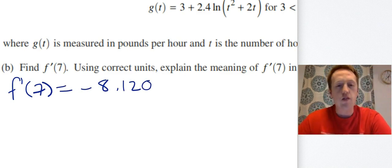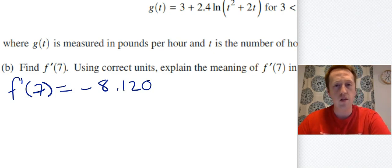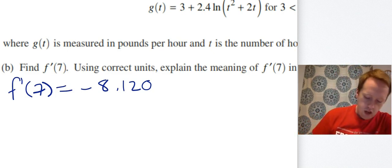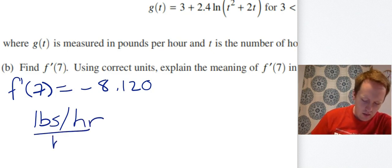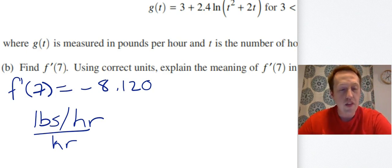The next part says, using correct units, explain the meaning of F prime of 7 in the context of the problem. First, find the units. Don't think that once you've found the units, you've explained the meaning — units don't tell you what's going on, they're just units. To get the units for F prime, take the units for F of T — that's pounds per hour — over the units for T, which is hours. So this derivative has units of pounds per hour per hour.